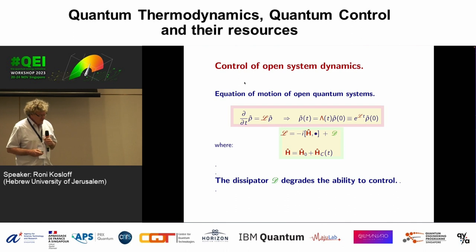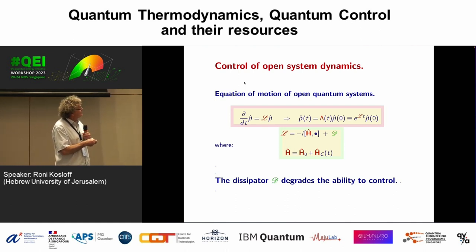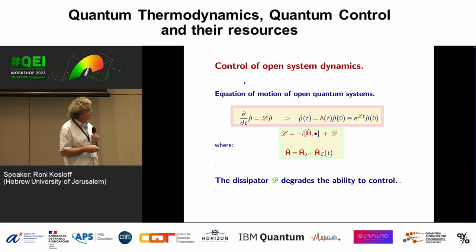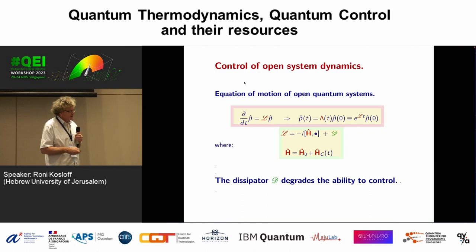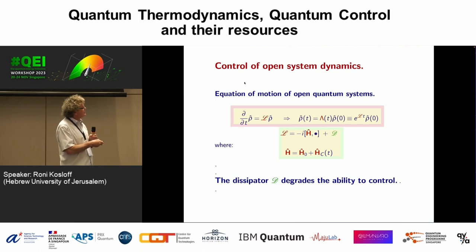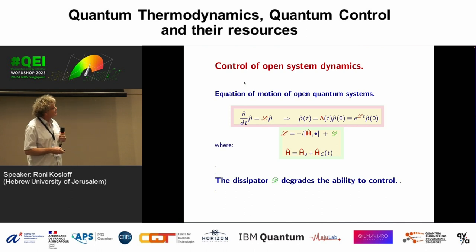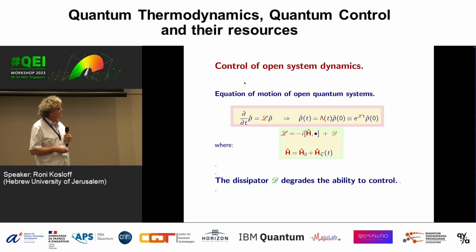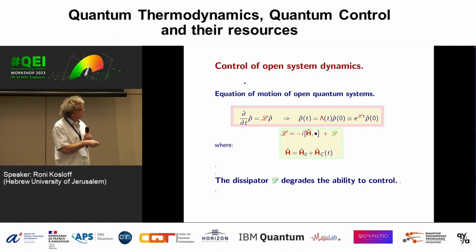To put this in perspective, I need an equation of motion — the Liouville-von Neumann equation — either in differential form or as an integral form representing a gate taking an initial state to a final state. I assumed my Liouville-von Neumann map has an inverse, which is not completely general but what I'll use. The Liouville has the commutator with the Hamiltonian plus a dissipative part, and my control has a drift part and a controller part. The dissipator degrades our controllability.